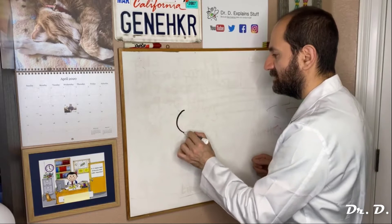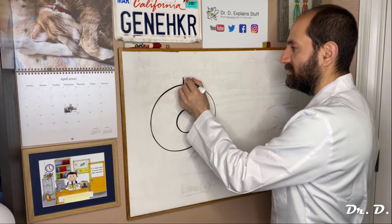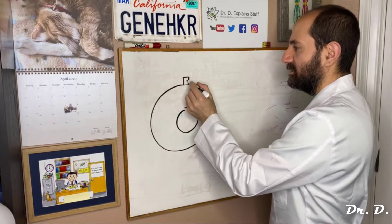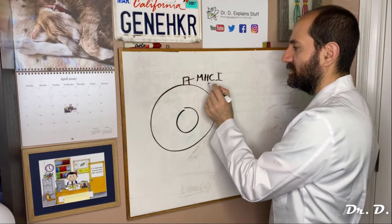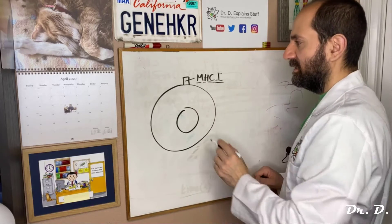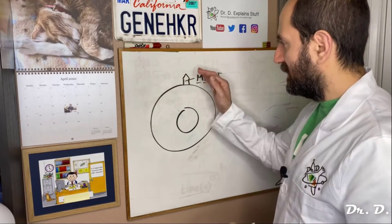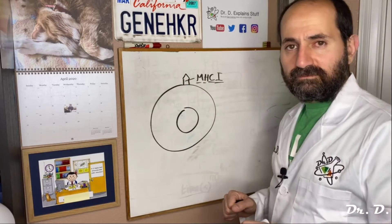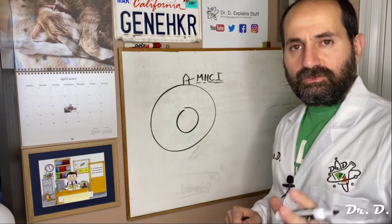Any nucleated cell has a protein structure on top called MHC1, major histocompatibility complex one. I've drawn it with an arrow at the top. MHC1 is on the surface of your nucleated cells.